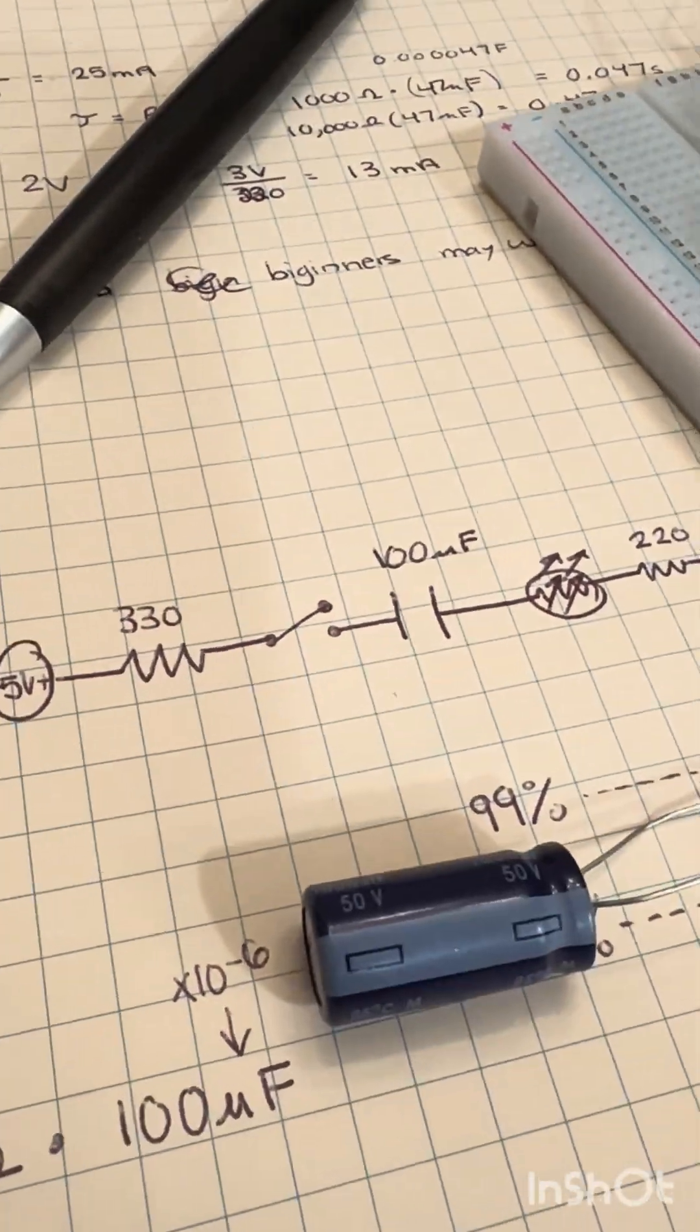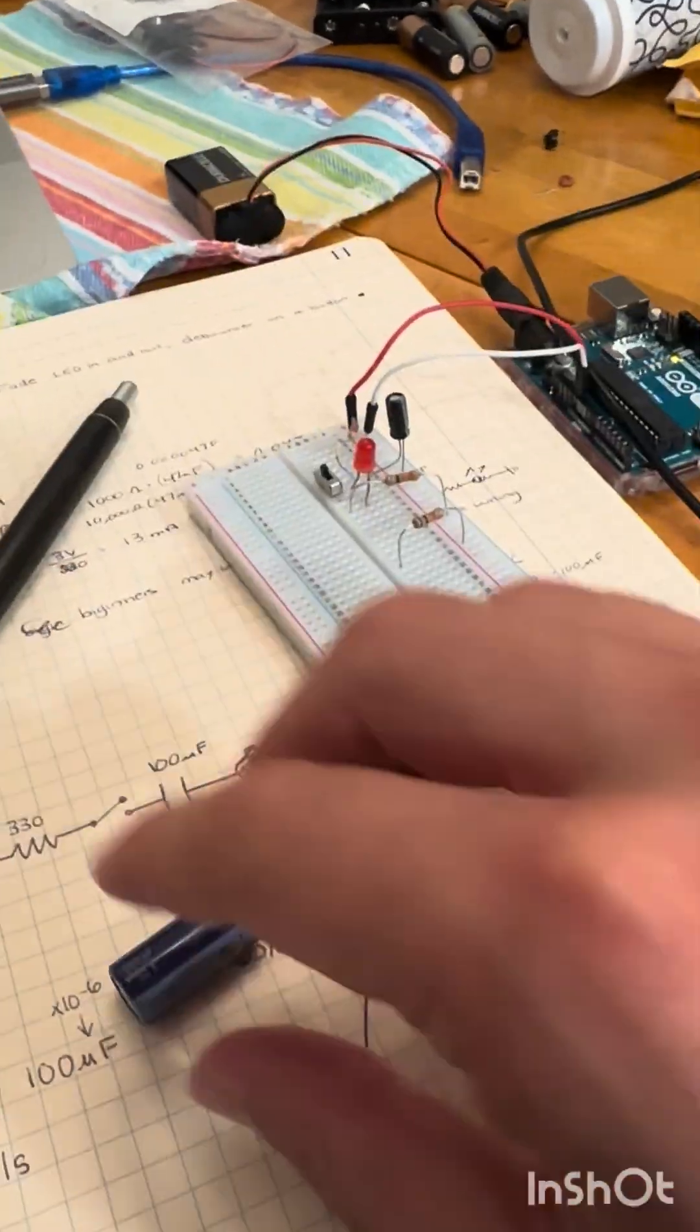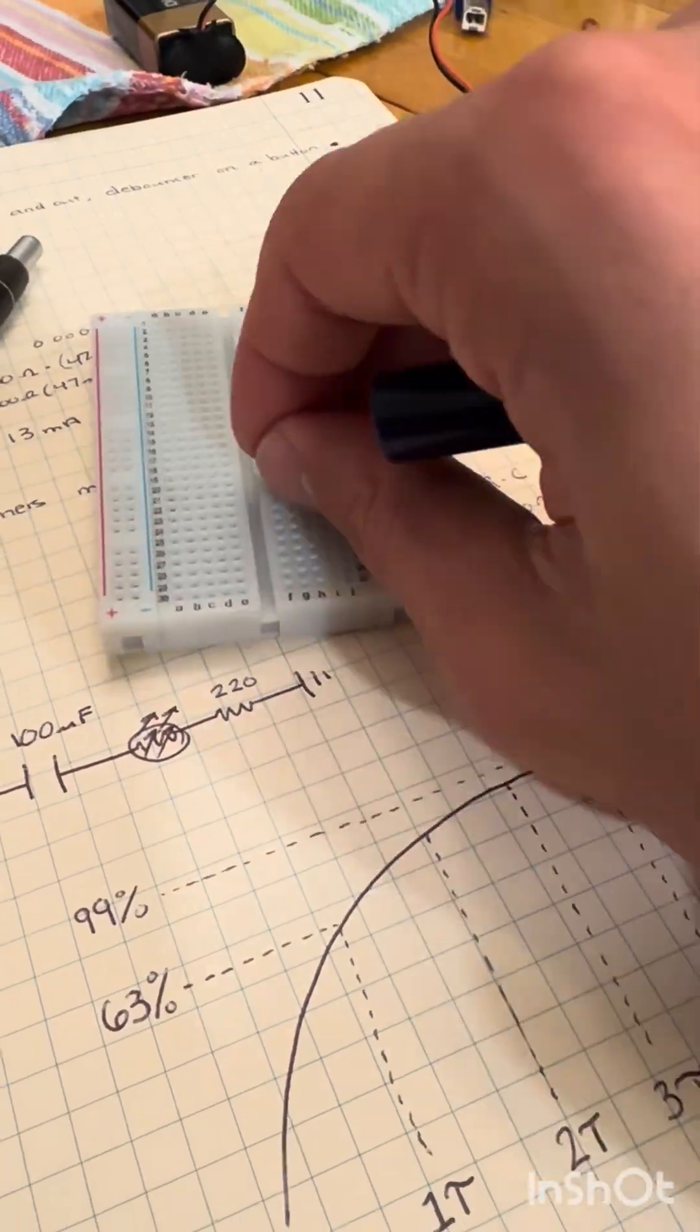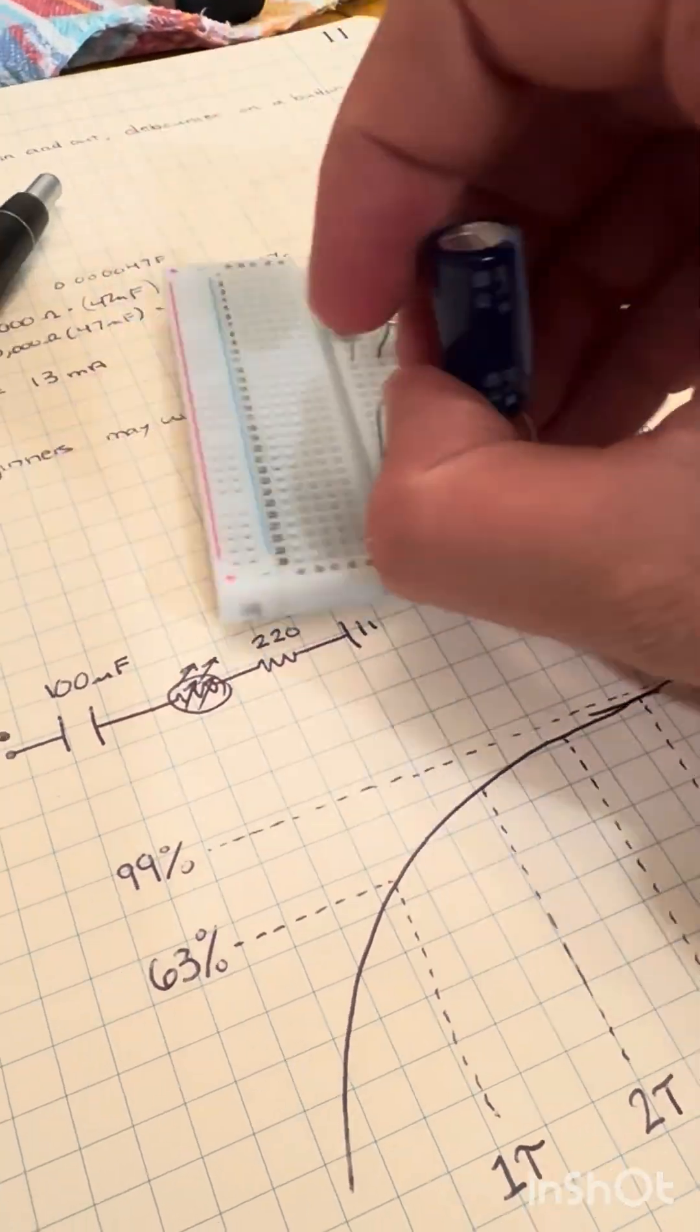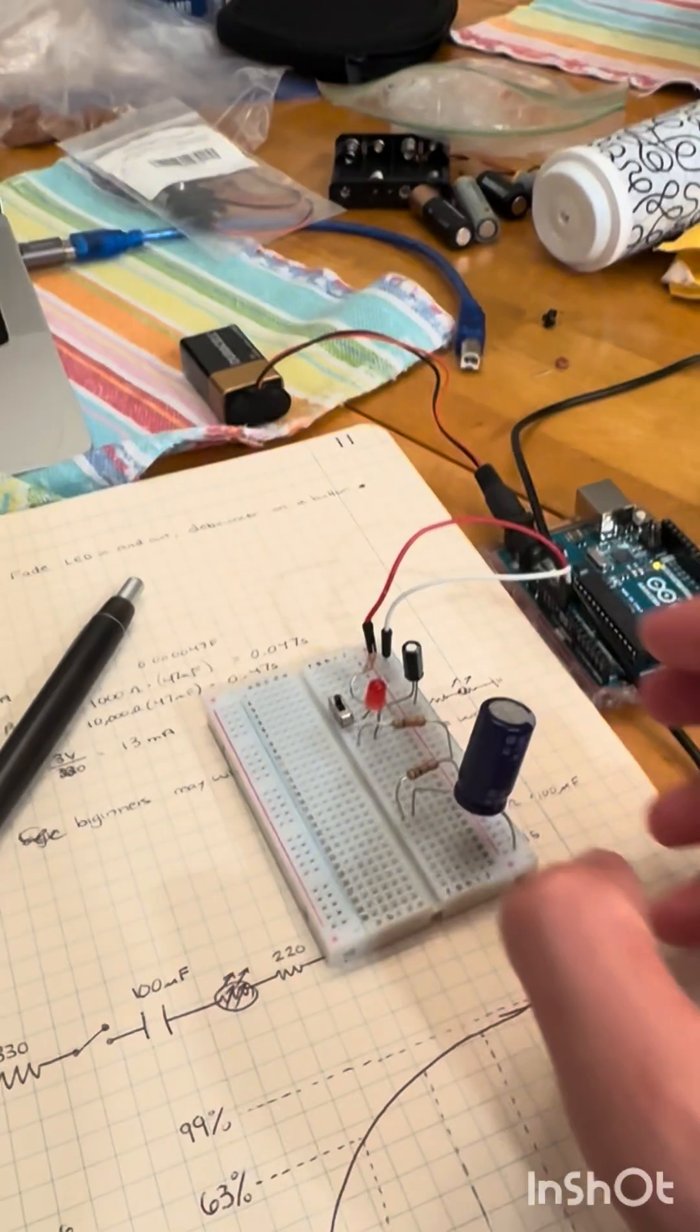To charge this capacitor, I will put a resistor to 5 volts because this capacitor is so big, it could draw too much current that my Arduino can't handle.